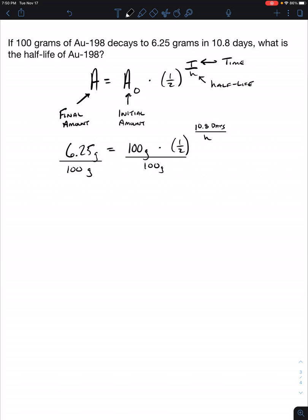So we can go ahead and divide these out. So 6.25 divided by 100 grams should be 0.0625, which is equal to one half to the 10.8 days over H.